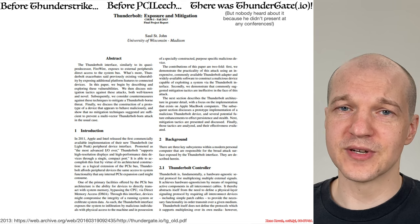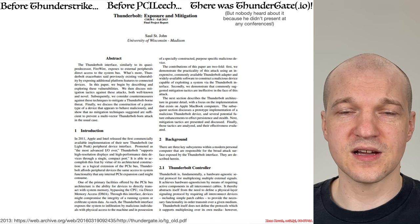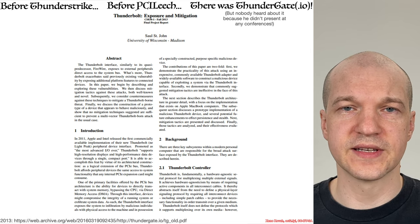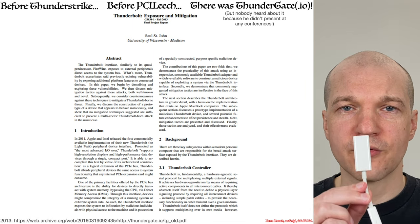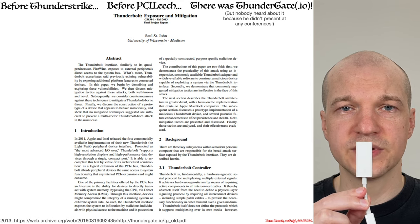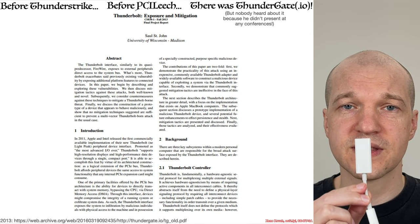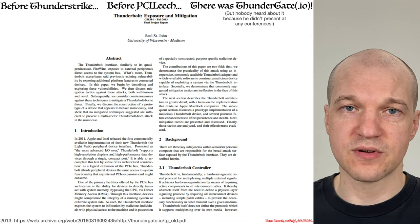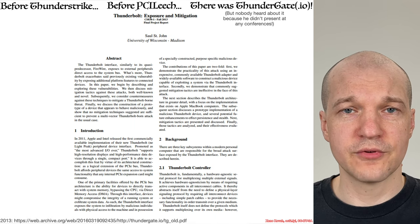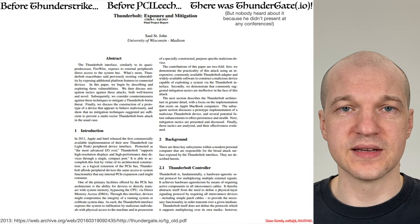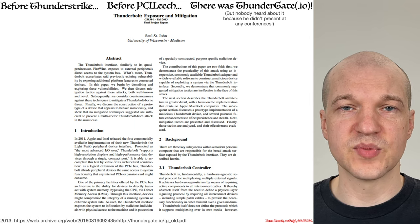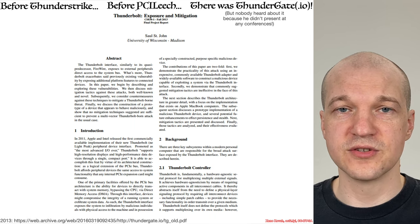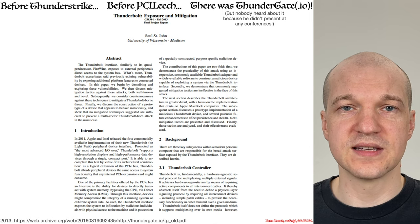Unfortunately, nobody really heard about this until much later because he didn't present it at any conferences. The important thing about this work is that he released a tool at thundergate.io, which is still available on GitHub. This tool allowed you to rewrite the Option-ROM on an Apple Thunderbolt Ethernet adapter and also rewrite the firmware of the Broadcom chip that runs on it. Rewriting the Option-ROM enabled Option-ROM type attacks, and rewriting the firmware allowed for arbitrary DMA attacks — the type of things that tools like PCI Leach do.